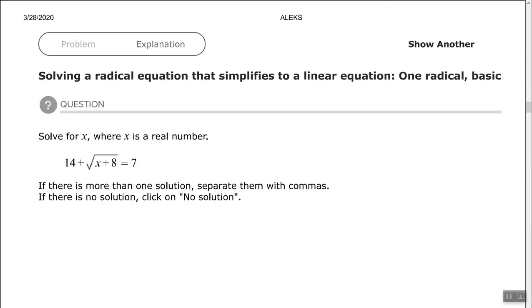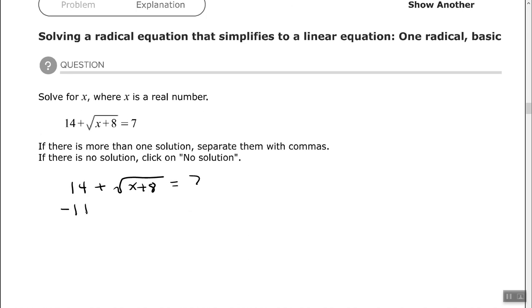Okay. All right, so here we have 14 plus the square root of x plus 8 equals 7. So again, we want to isolate the radical. And not on purpose, but again, we end up with the square root of some number x plus 8 equal to negative 7, which again is not possible, so no solution.